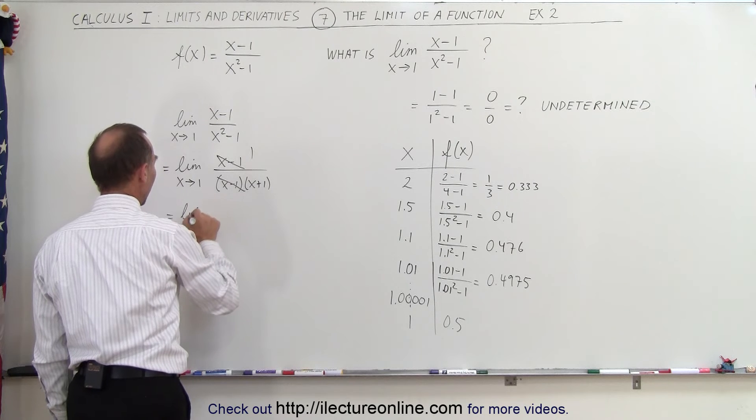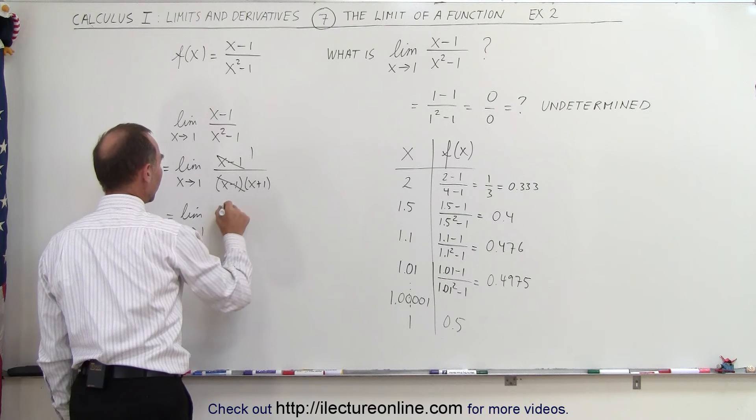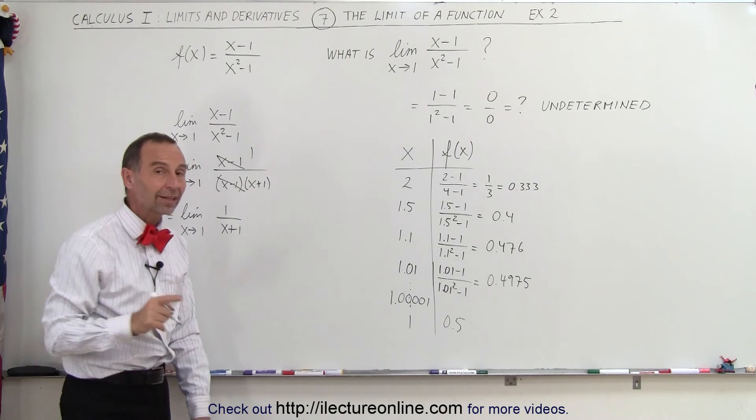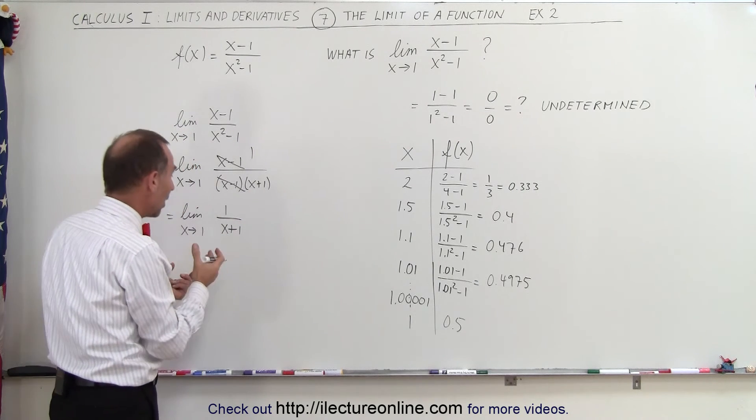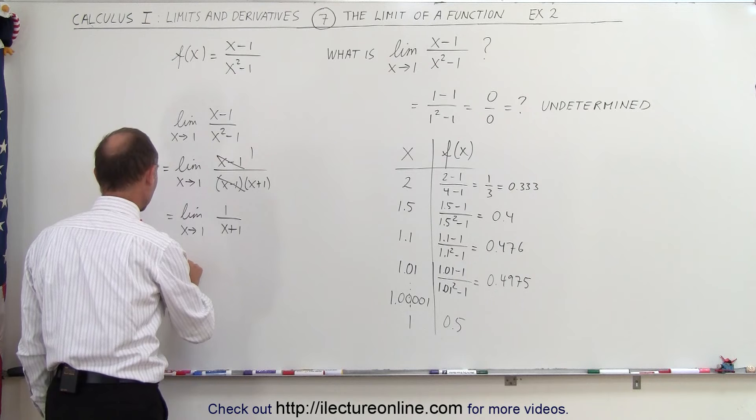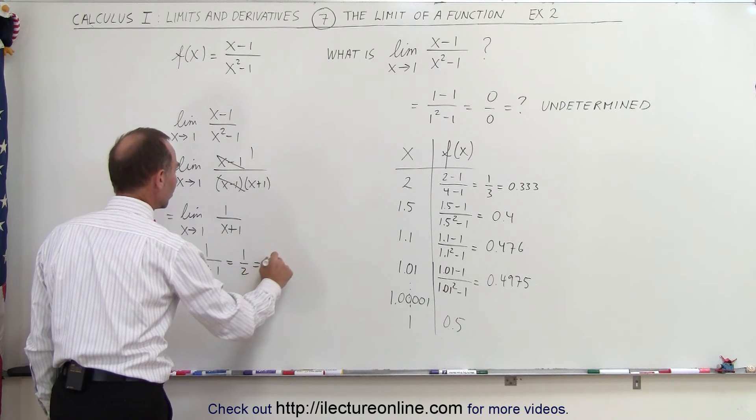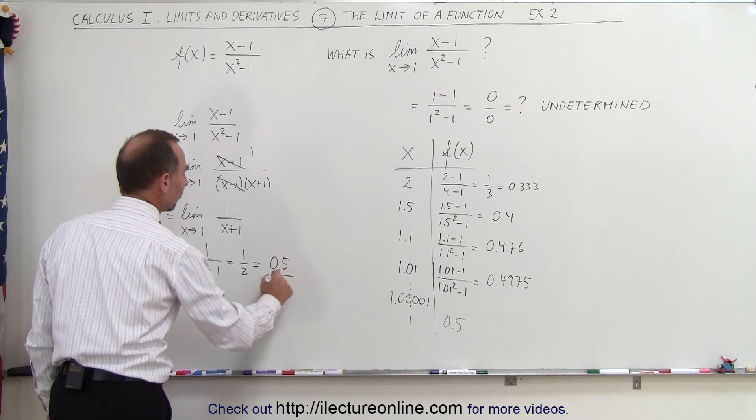So this is equal to the limit as x approaches 1 of 1 divided by x plus 1. And now we can go ahead and plug in the value of 1 for x, because now we don't have a zero in the denominator when we do that. So this is equal to 1 divided by 1 plus 1, which is equal to 1 divided by 2, which is equal to exactly 0.5.